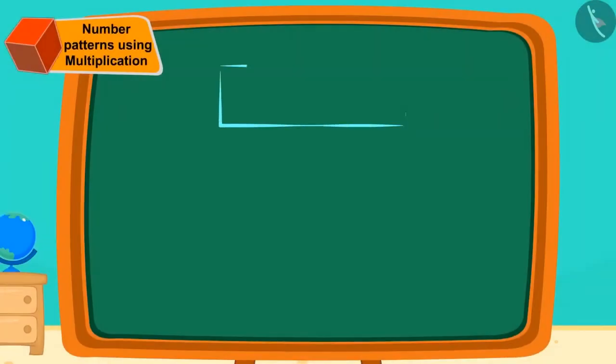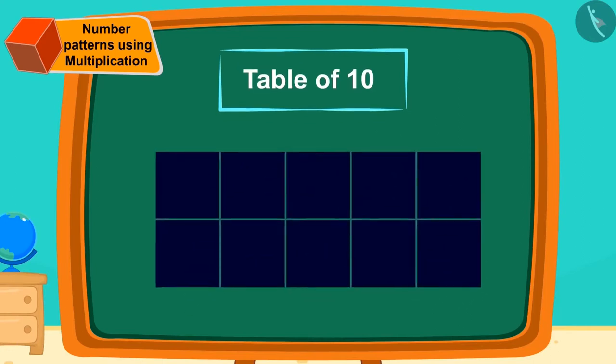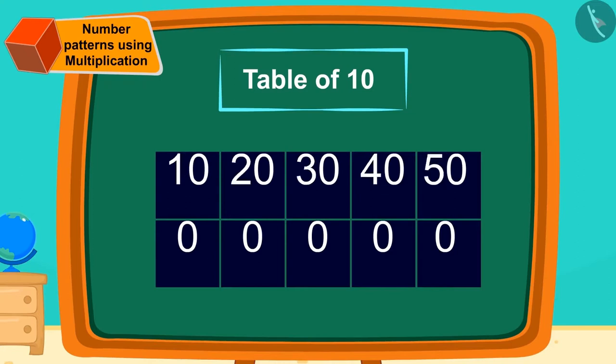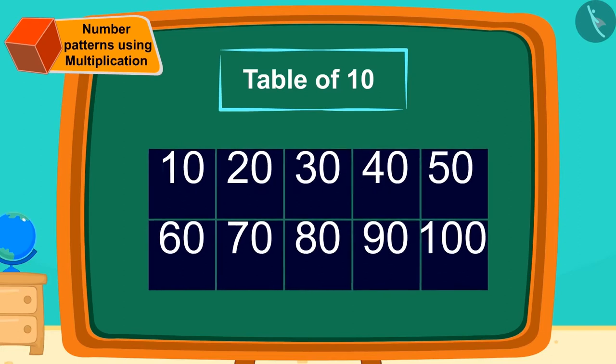Let us now learn the easy process of memorizing the table of 10. First, we will write 0 in this way 10 times. Now, next to these zeros, we will write the numbers from 1 to 10 like this.